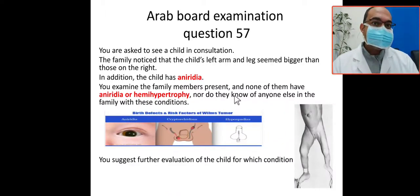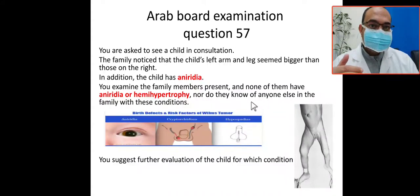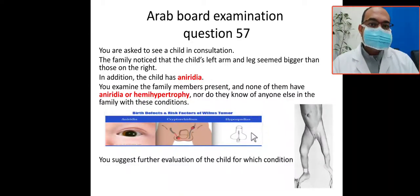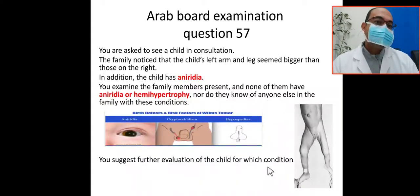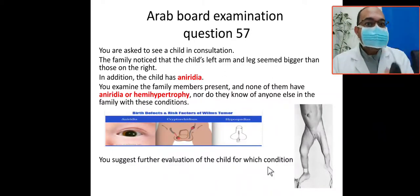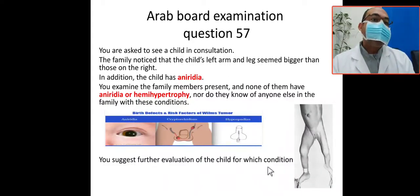There is a negative family history of aniridia and hemihypertrophy. You examined the family members present and none of them have aniridia or hemihypertrophy. You then suggest further evaluation of the child for which condition — searching for which tumor is associated with aniridia and hemihypertrophy.